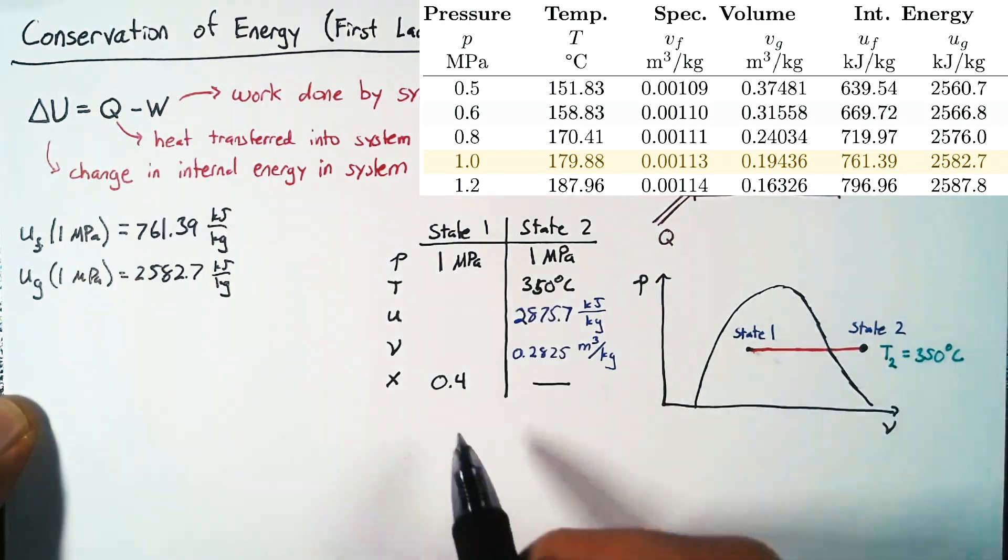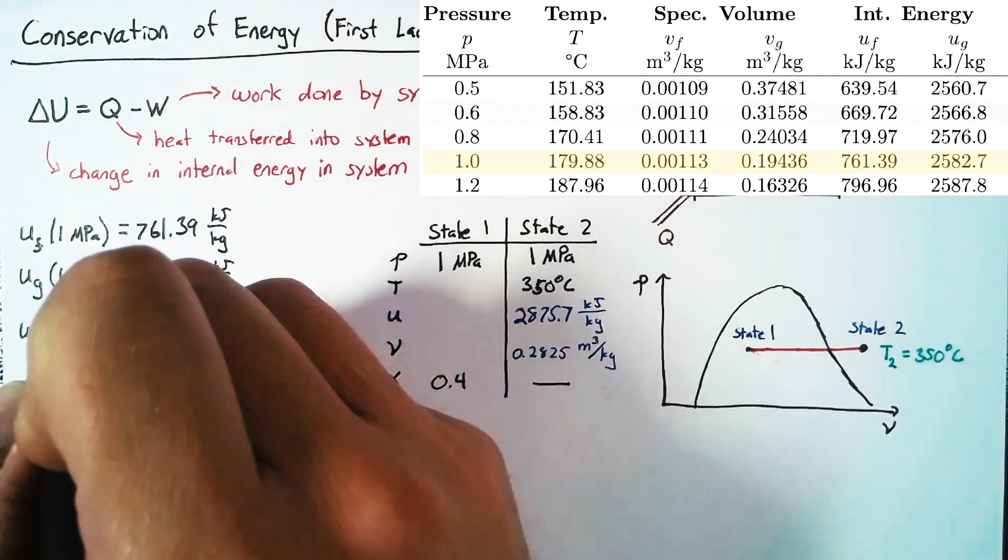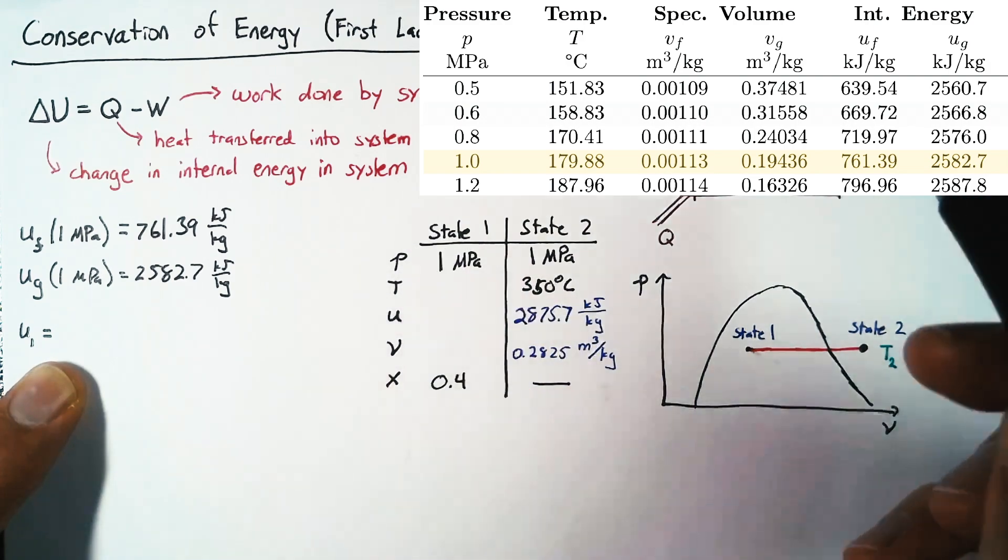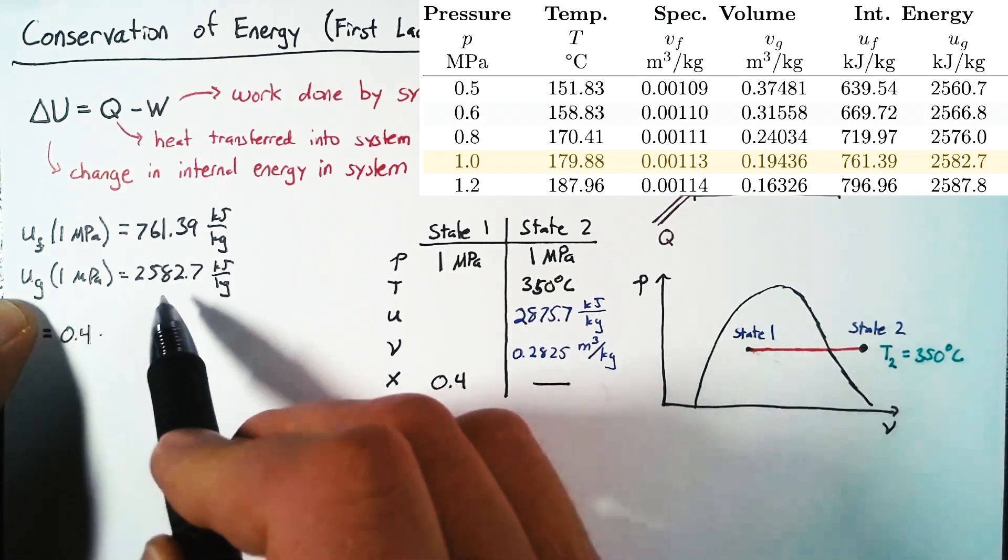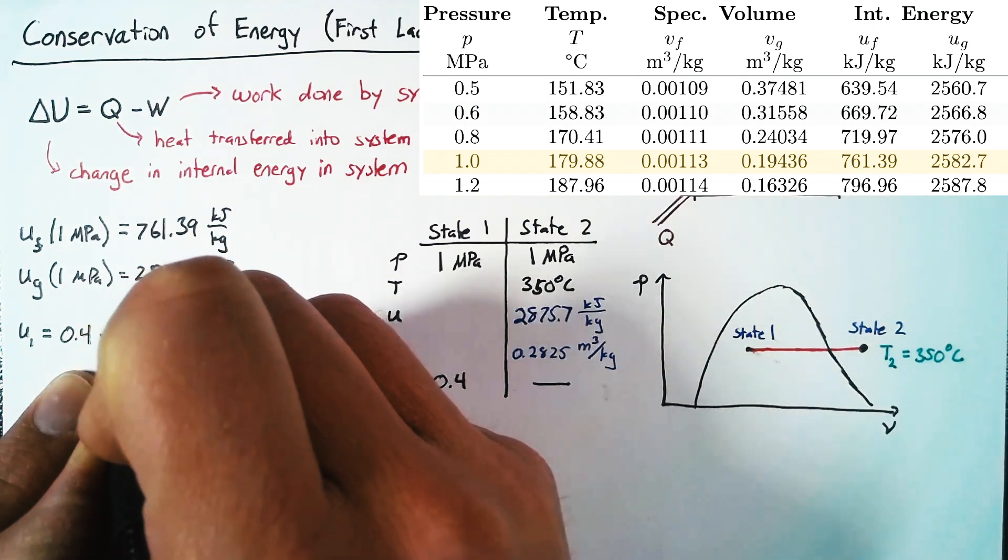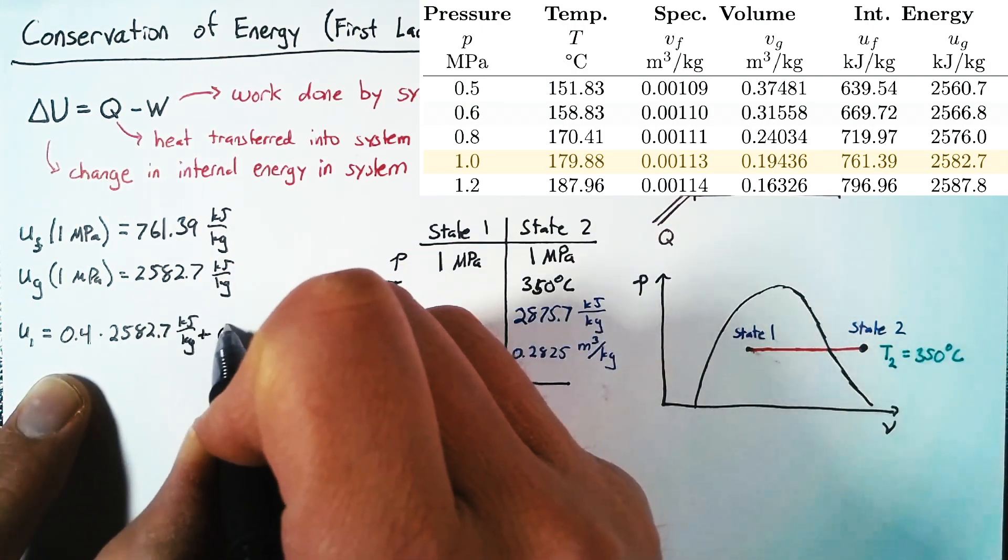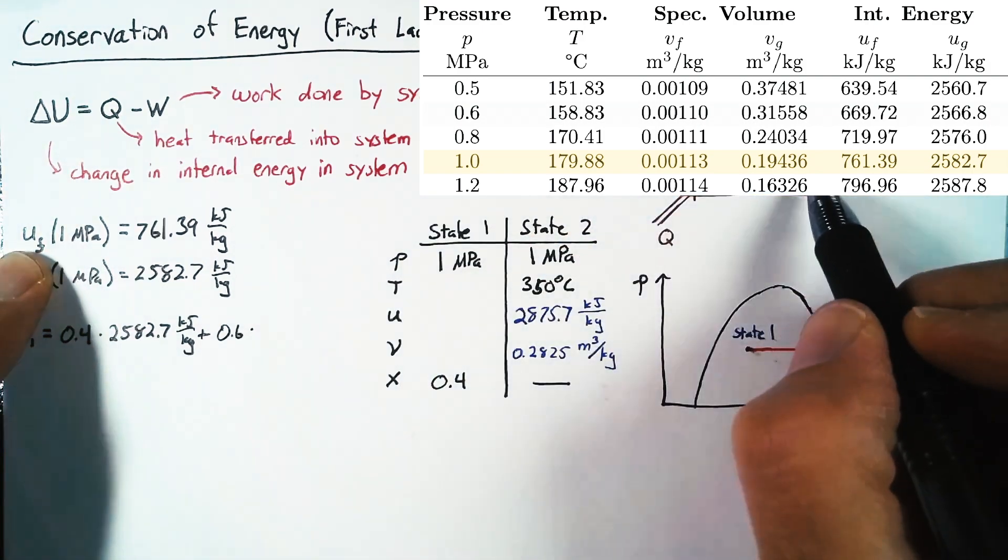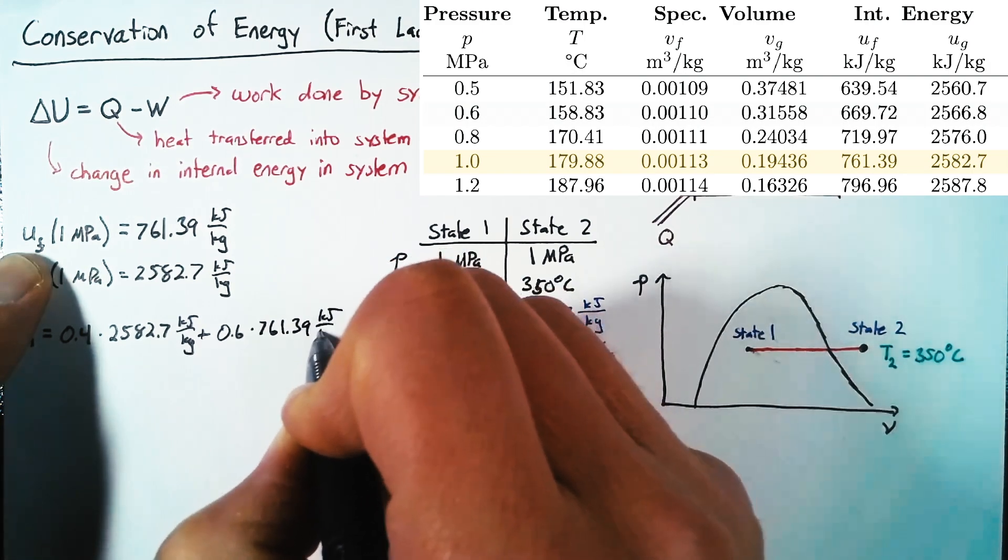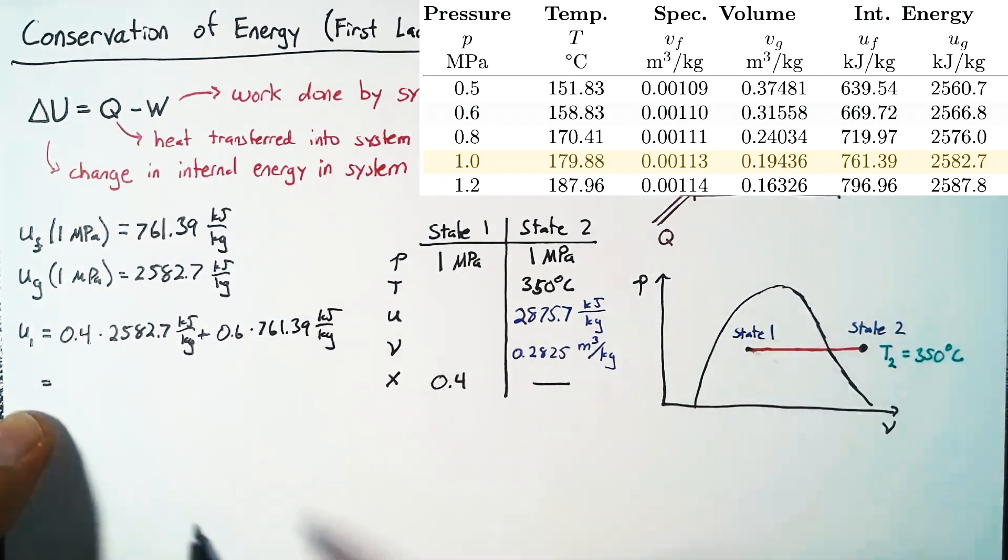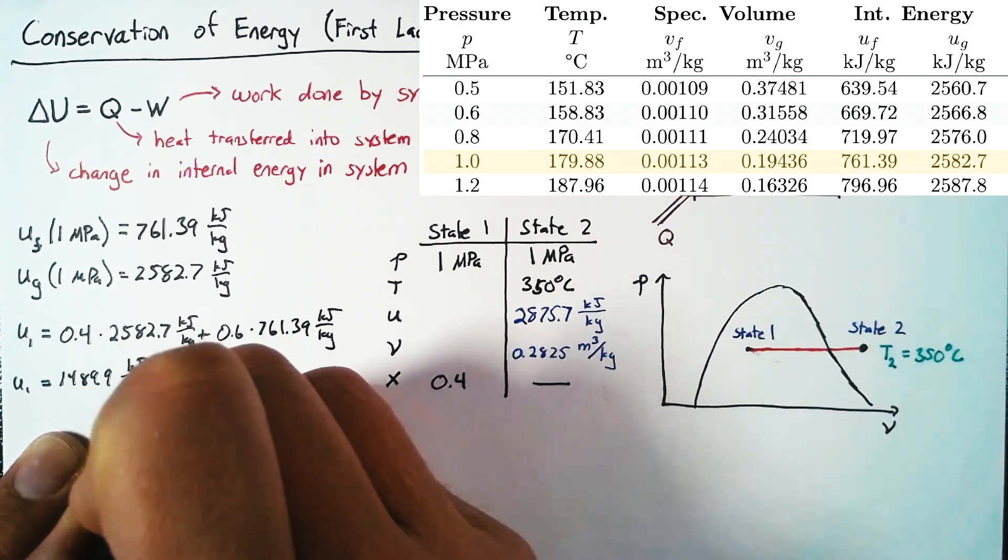Now, in order to actually find our state, we use our quality. And so we can say that U1 is equal to the percentage of our mass that is made of steam. So that's 0.4, or 40%, multiplied by our UG value, the specific internal energy of that steam, plus the remainder, so 0.6, multiplied by this internal energy of water, which is that 761.39. And doing that math, we end up with a U1 value of 1489.9 kilojoules per kilogram, which we can then fill in in our table over here.